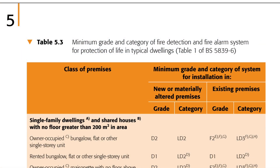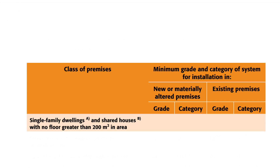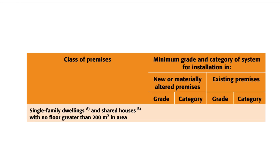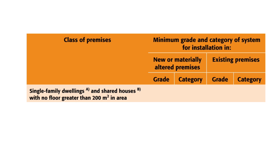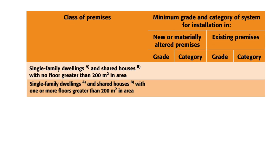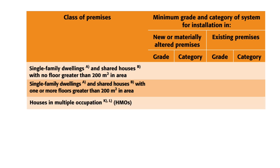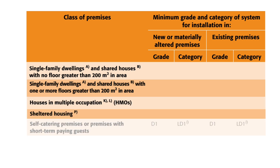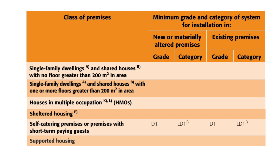In the IET guide, this table is identified as Table 5.3, and it splits dwellings into six classes: single-family dwellings and shared houses with no floor greater than 200 square metres in area; single-family dwellings and shared houses with one or more floors greater than 200 square metres in area; houses in multiple occupation, or HMOs; sheltered housing; self-catering premises or premises with short-term paying guests; and supported housing.